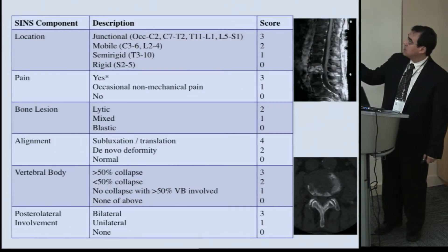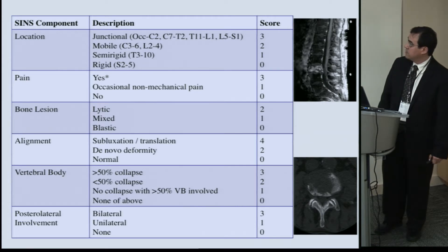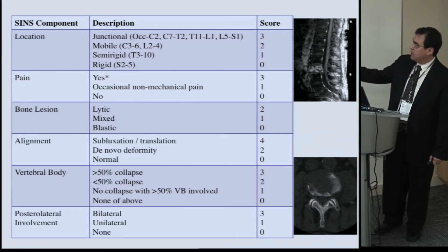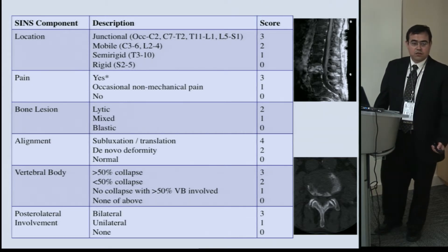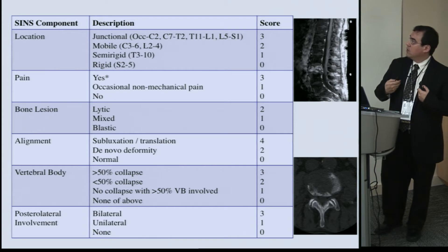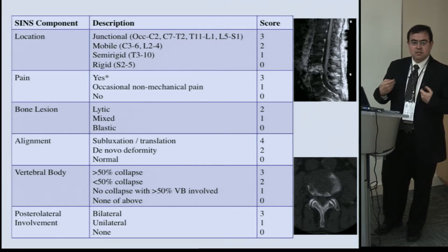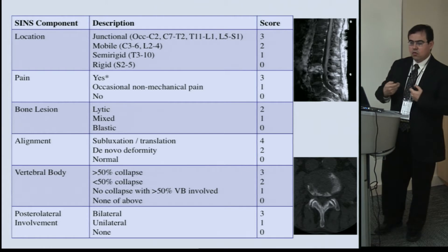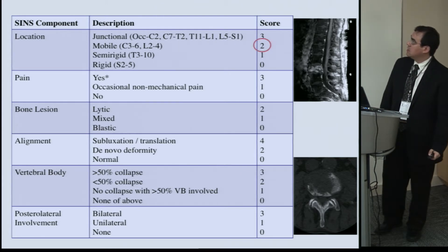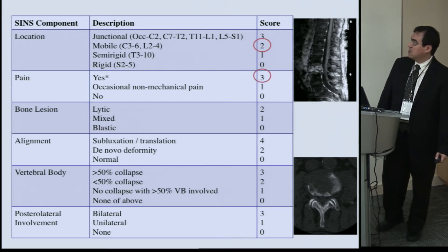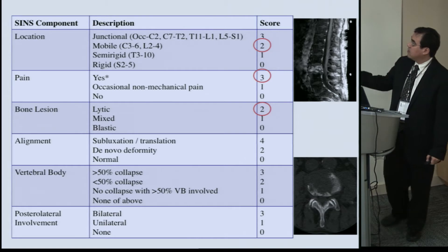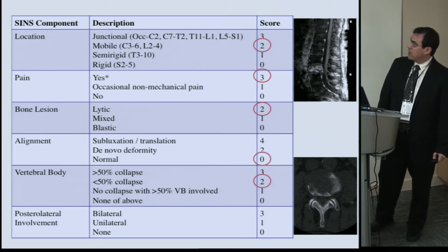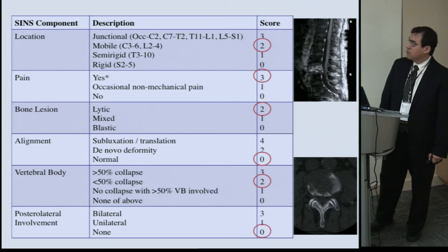For instance, this patient has colon cancer with a metastatic lesion to L3. The CT scan shows that the posterior elements are intact. If I get a referral or want to refer to stereotactic radiation, we now have a universal language. In this case, L3 is in the mobile spine — two points. The patient has mechanical pain — three points. The lesion is lytic — two points. Alignment is normal — zero points. Collapse is less than 50% and there is no posterior element involvement.